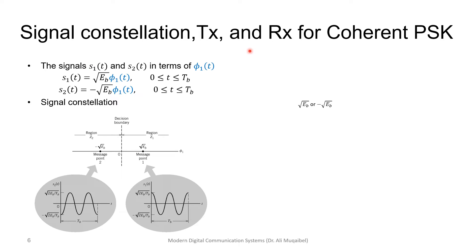All right, now let's look at the signal constellation, the transmitter and the receiver for coherent phase shift keying. Okay, the signal constellation is shown here. We have one basis. We have two signals, which are equal to square root of Eb times the basis in the positive and in the negative side. We have two possible signals.